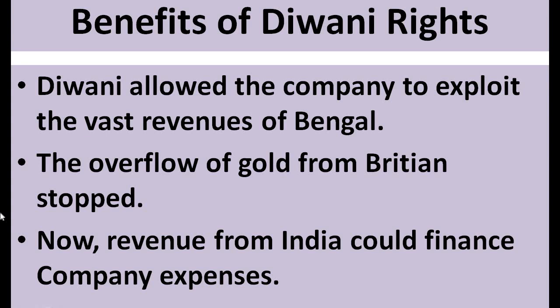With the Diwani right, the overflow of gold from Britain stopped. Before this, the company was dependent on the British government to purchase raw materials and cover other expenses. But now, after the Diwani right, the company had its own source of income — it could collect taxes, and the revenue from India could finance all company expenses.